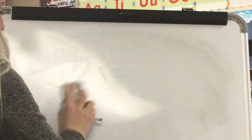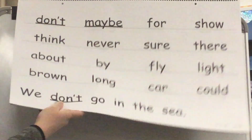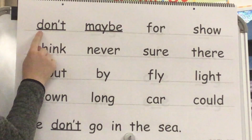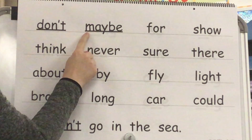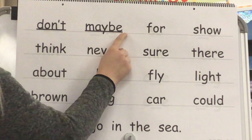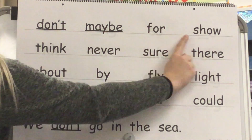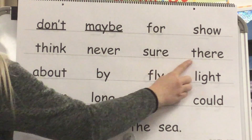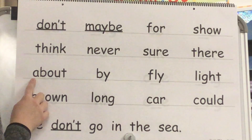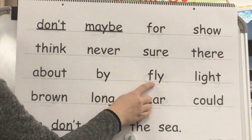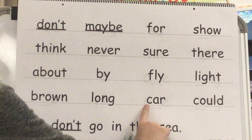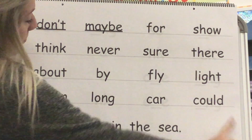Let's read our high frequency words. This word is don't. What word? Don't. Yes, don't. This word is maybe. What word? Maybe. Yes, maybe. Word: for. Word: show. Word: think. Word: never. Word: sure. Word: there. Word: about. Word: by. Word: fly. Word: light. Word: brown. Word: long. Word: car. Word: could. Great job.